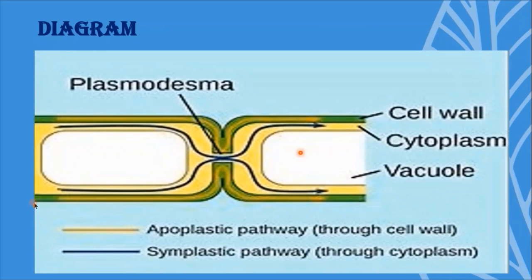If water or salts travel along the cell wall from one cell to another cell, we call that pathway the apoplastic pathway.